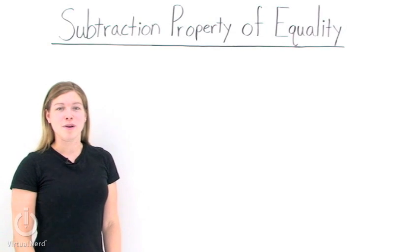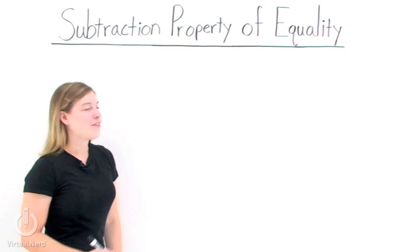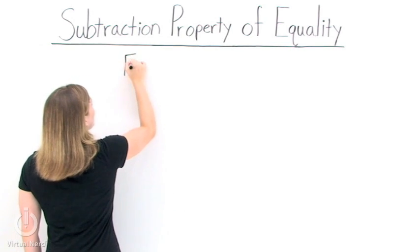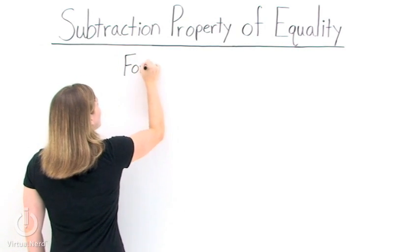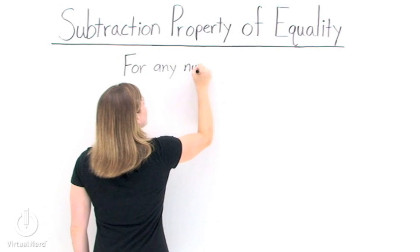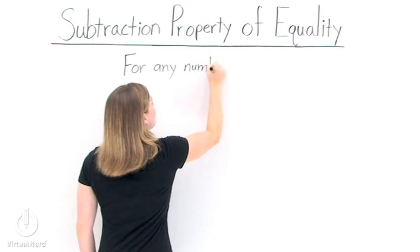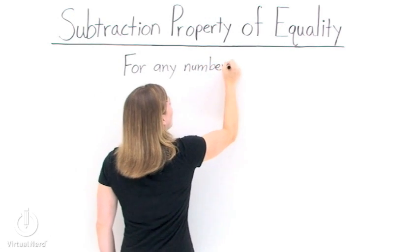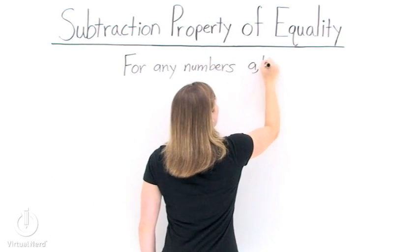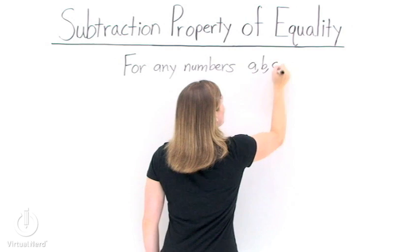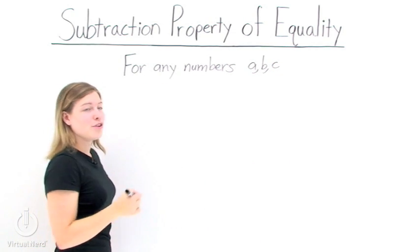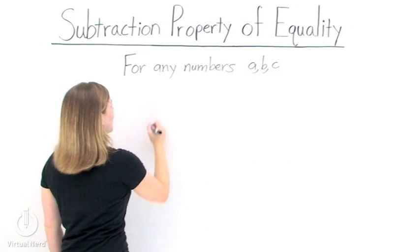What is the subtraction property of equality? The subtraction property of equality states that if we have an equality and we subtract any number from one side of the equal sign, then in order to preserve the equality, we must subtract that same number from the other side of the equal sign.